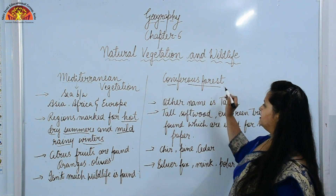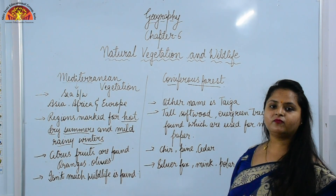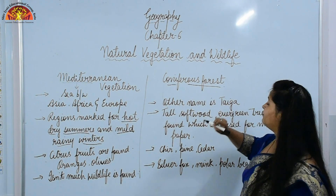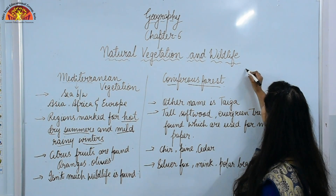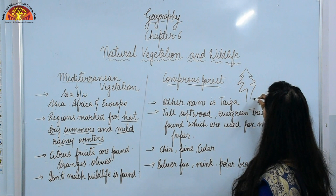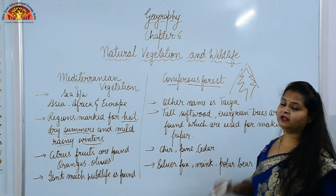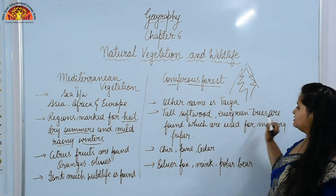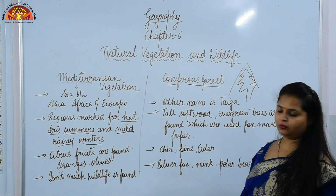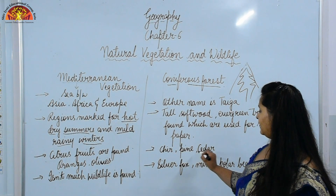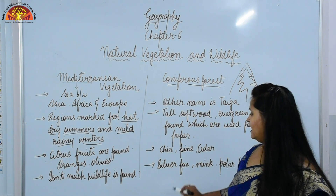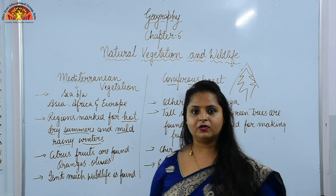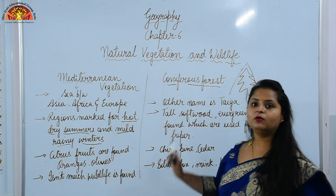Next is coniferous forest, whose other name is taiga. As you move towards higher latitudes, you find such trees with cone-like shapes, that is why they are known as coniferous forest. Tall, softwood, evergreen trees are found which are used for making paper. Vegetation like pine and cedar are found, and wildlife like silver fox, mink, and polar bear are found in coniferous forest.